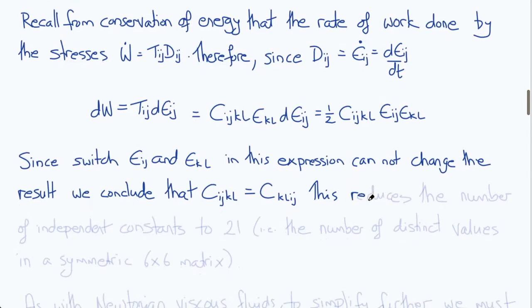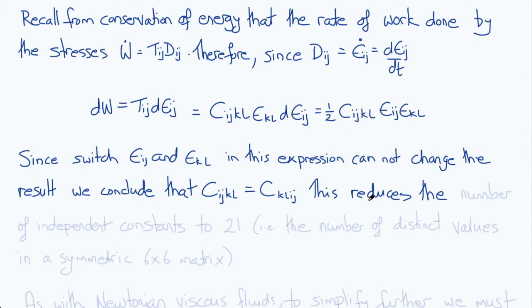So this additional symmetry further reduces the number of independent constants from 36 to 21. So you can think again of that 6x6 matrix relating the 6 independent components of the stress to the 6 independent components of the strain, but now that's actually a symmetric matrix.